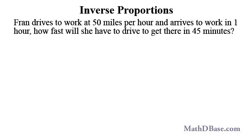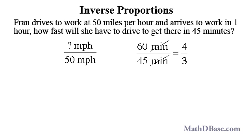For example, if Fran drives to work at 50 miles per hour and arrives at work in one hour, how fast will she have to drive to get there in 45 minutes? The ratio of speeds is the unknown speed that Fran would have to drive to arrive at work in 45 minutes to 50 miles per hour, and the corresponding inverse ratio of times is 60 minutes to 45 minutes, or 4 over 3.